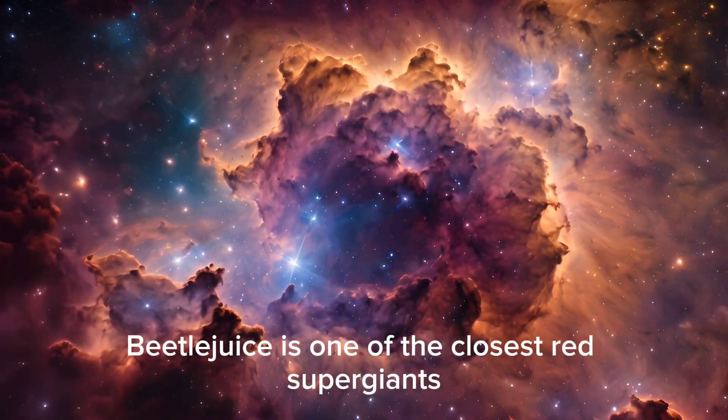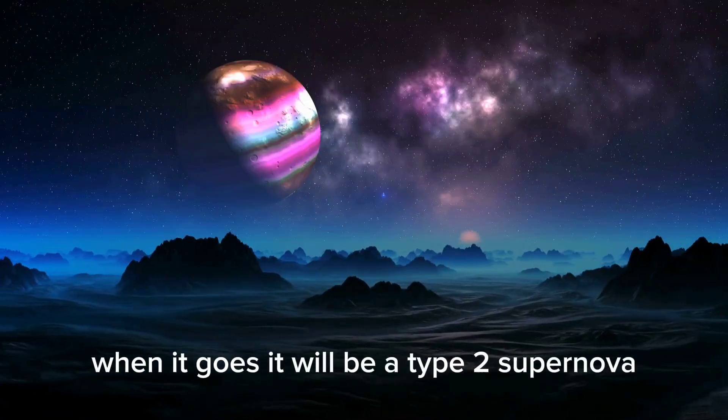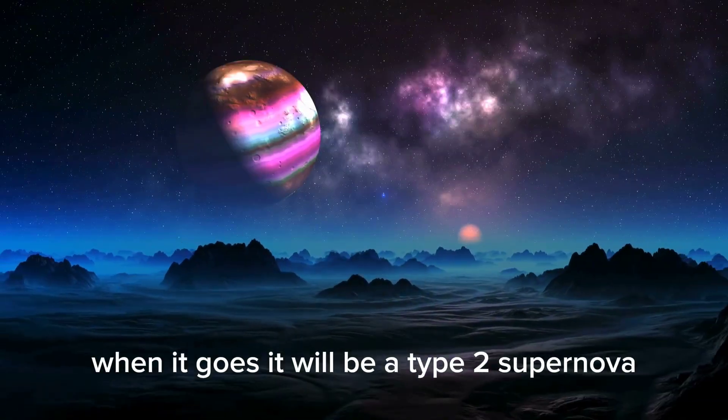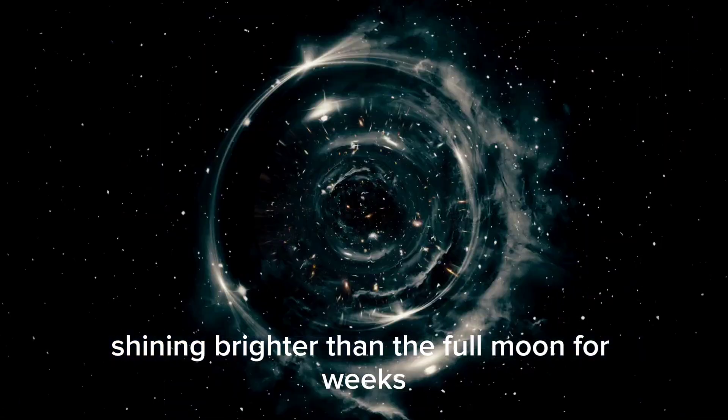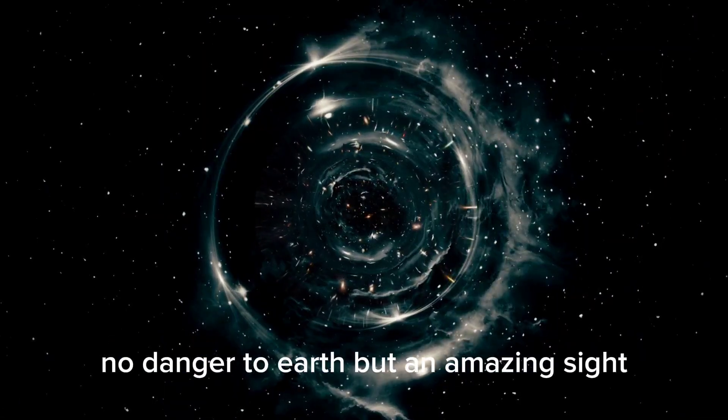Betelgeuse is one of the closest red supergiants. When it goes, it will be a type 2 supernova visible in daylight, shining brighter than the full moon for weeks. No danger to Earth, but an amazing sight.